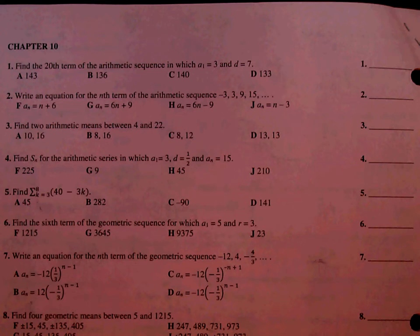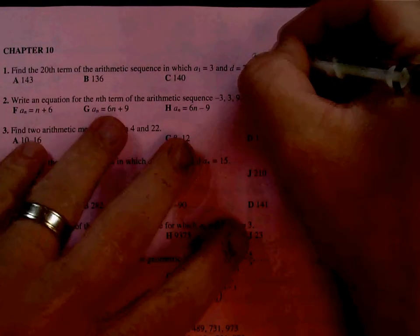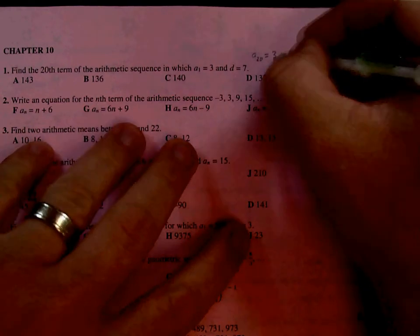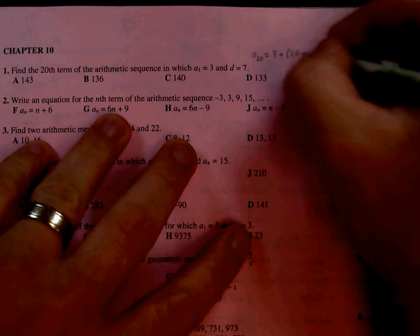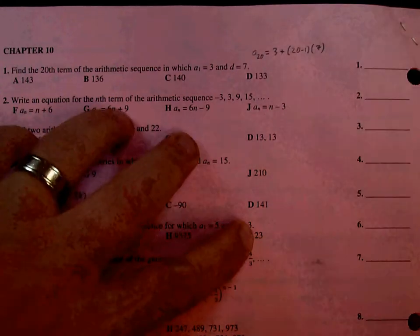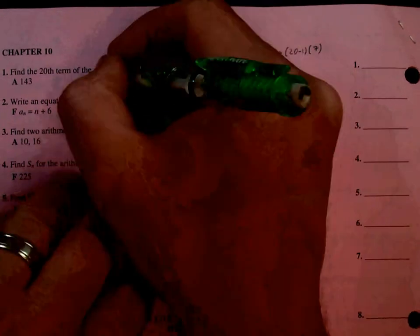Chapter 10. For the 20th term of an arithmetic sequence, we can use our formula. Looking for the 20th term, A sub 20, we know our first term is 3 plus N minus 1, so that would be 20 minus 1, which is 19, times D, which is 7. So ultimately it ends up being 3 plus 7 times 19, and we get 136B.